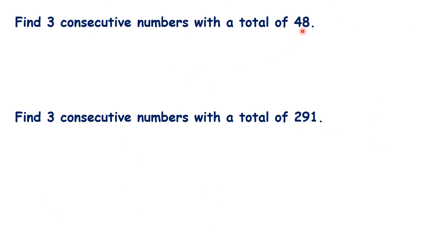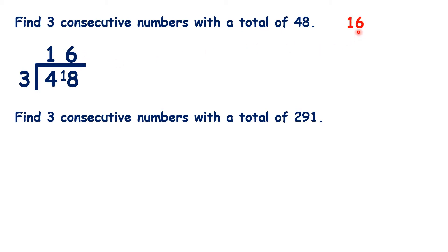We can use the same method to find three consecutive numbers with any total. For this first question, we want to find three consecutive numbers with a total of 48. So we divide 48 by 3, which gives us 16. So 16 is our middle number. Our first number is one less, so 15, and our third number is one more, so 17. So 15 plus 16 plus 17 gives a total of 48.